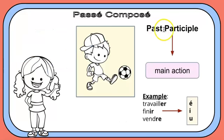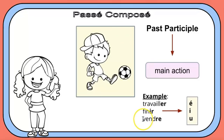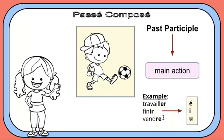The second step is to find the past participle. The past participle is the main action — for example, played ball. In French, you have three main regular types of verbs: ER verbs, IR verbs, and RE verbs. To form the past participle of ER verbs, take off the ER and add É. For IR verbs, take off the IR and add I. For RE verbs, take off the RE and add U.